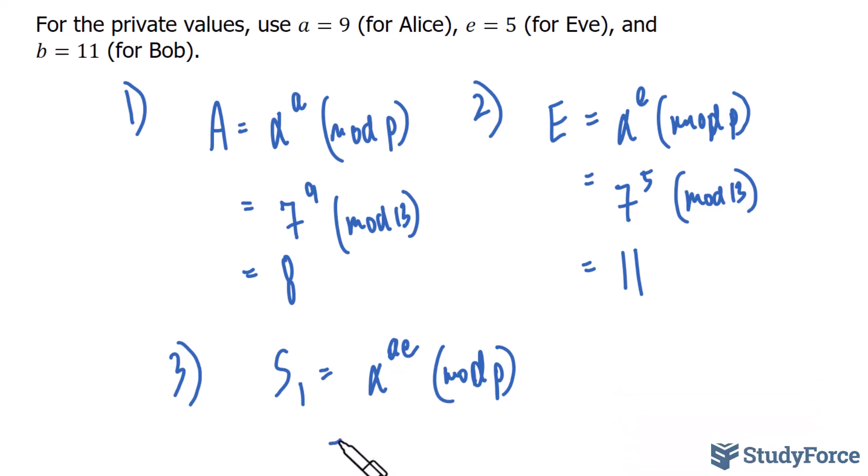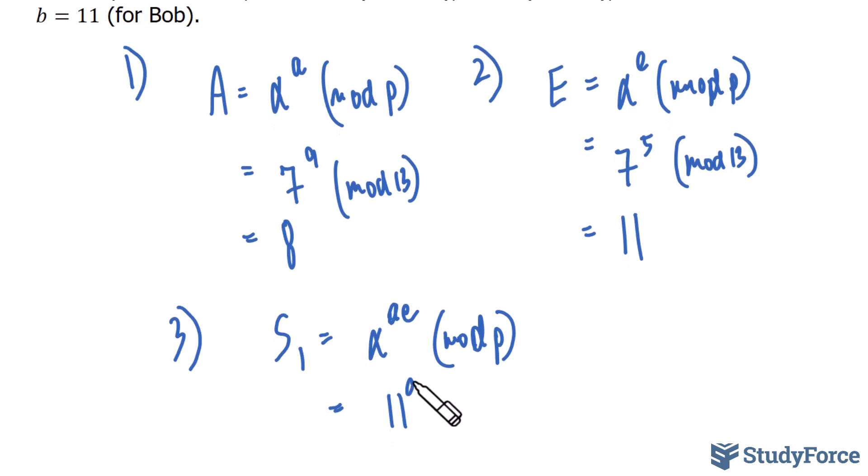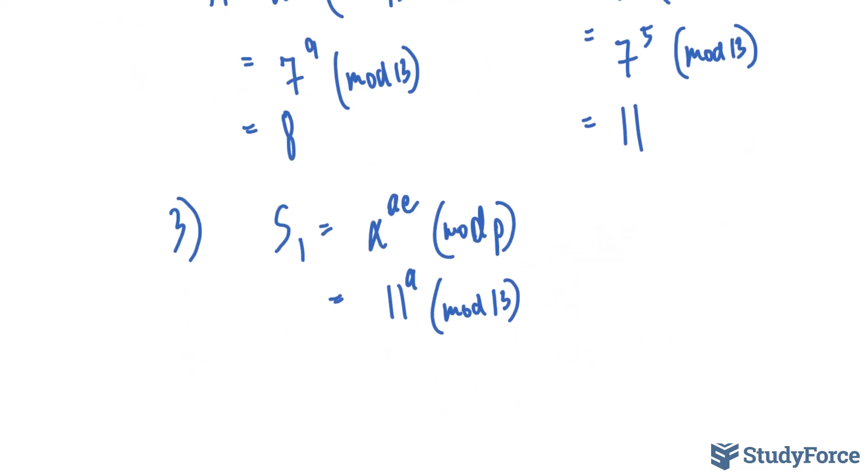Now this is the same thing as taking the value of E and raising it to the power of a, which was that private value that only Alice knows, mod 13. Computing this, you should find that the shared secret between Alice and Eve is equal to 8.